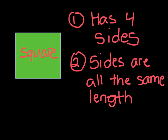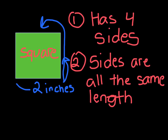The second rule is that all sides are the same length. So let's say that this length right here is two inches — that means all the other sides are also two inches. This is two inches, this is two inches, and this is also two inches. Those are the basic rules about what a square is.